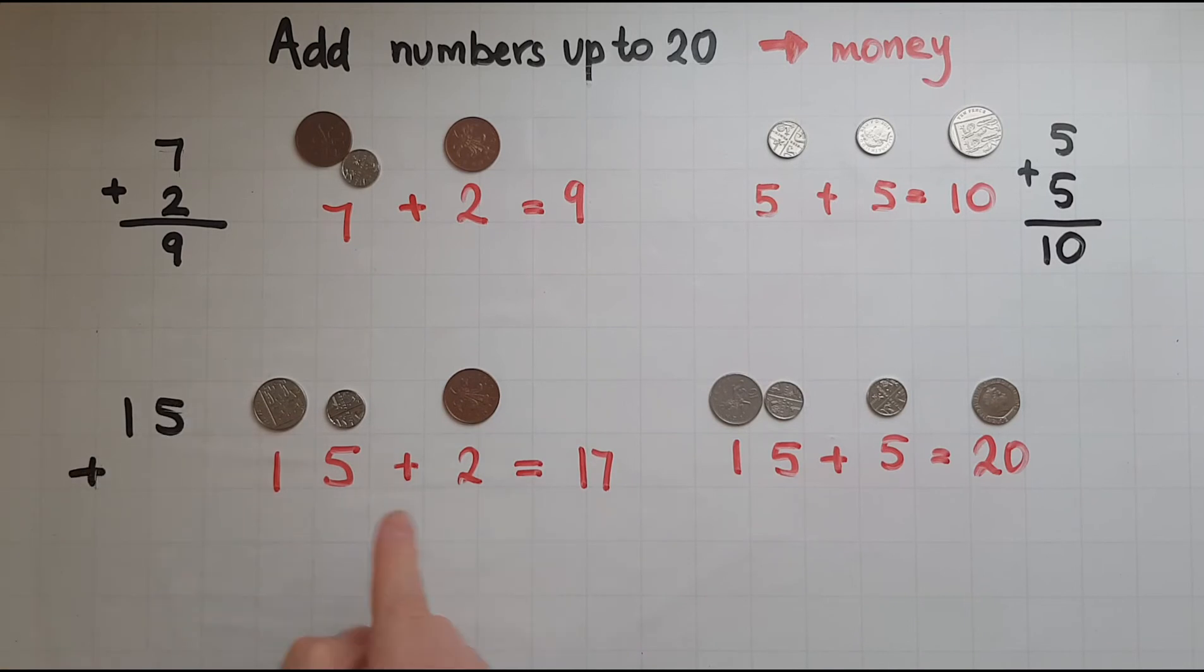15 plus two. Notice where I put the two under the single pennies, not the 10P coins which would come here or the 20P coins. So that is five and the two was seven. And the one makes 17. So 15 and the two makes 17.